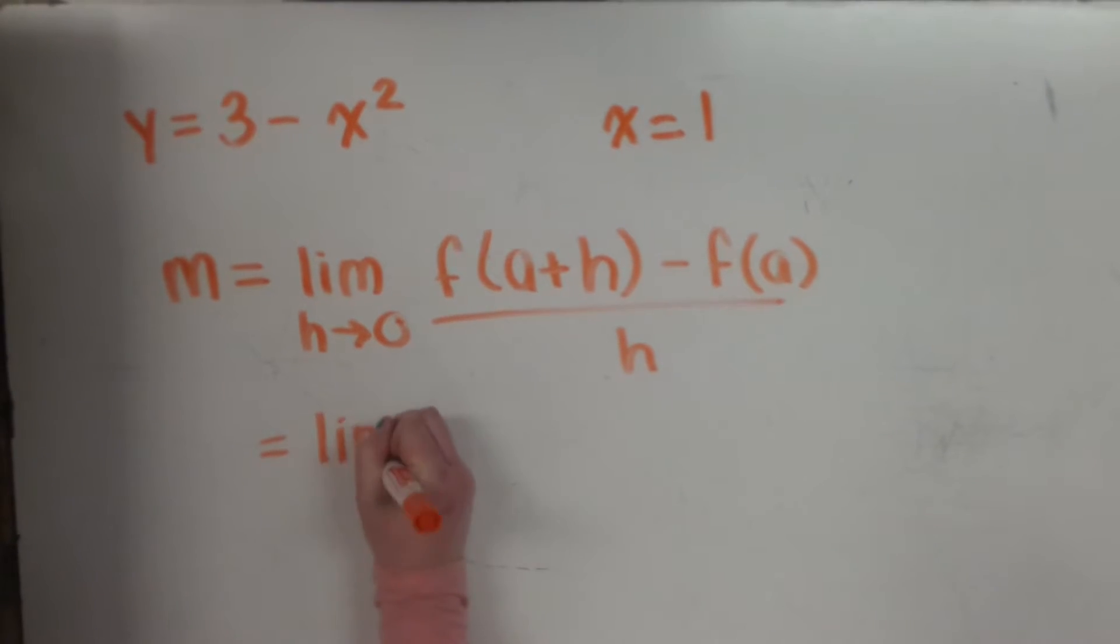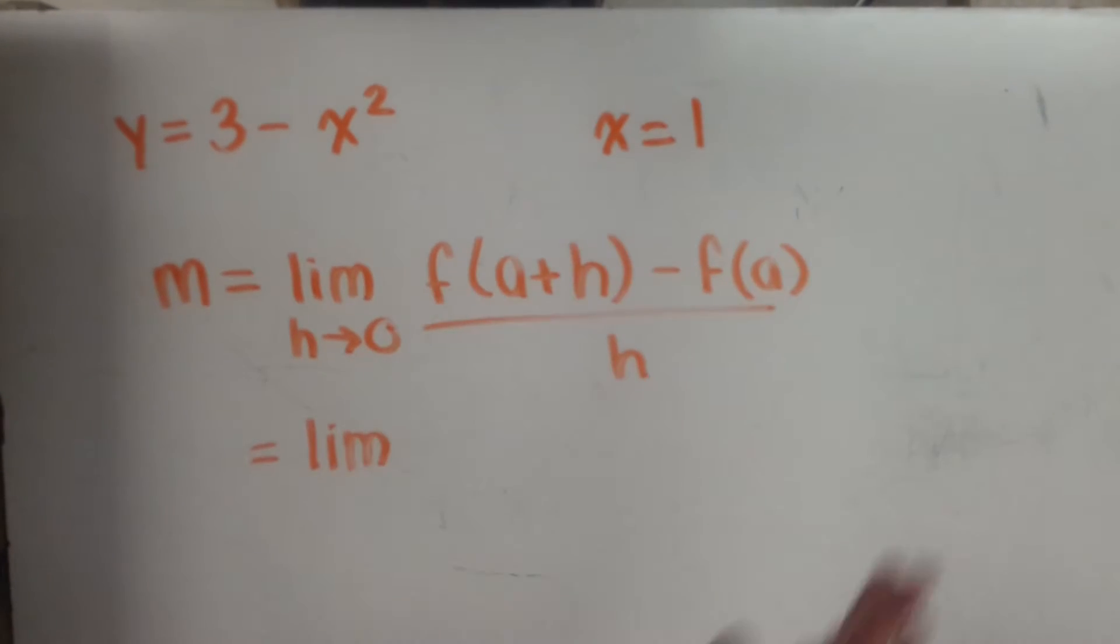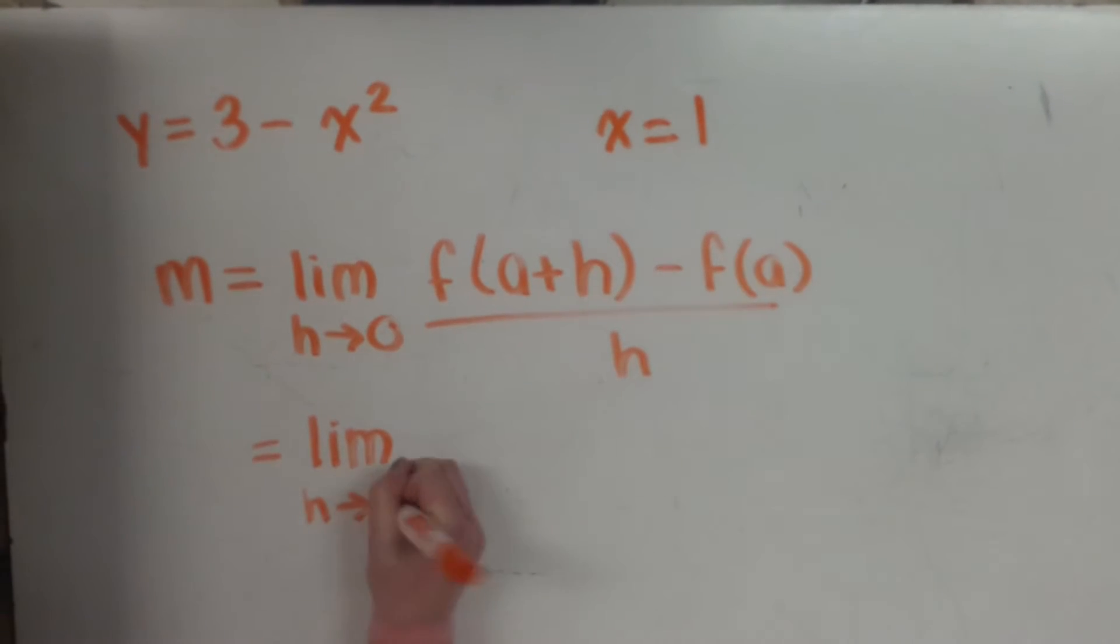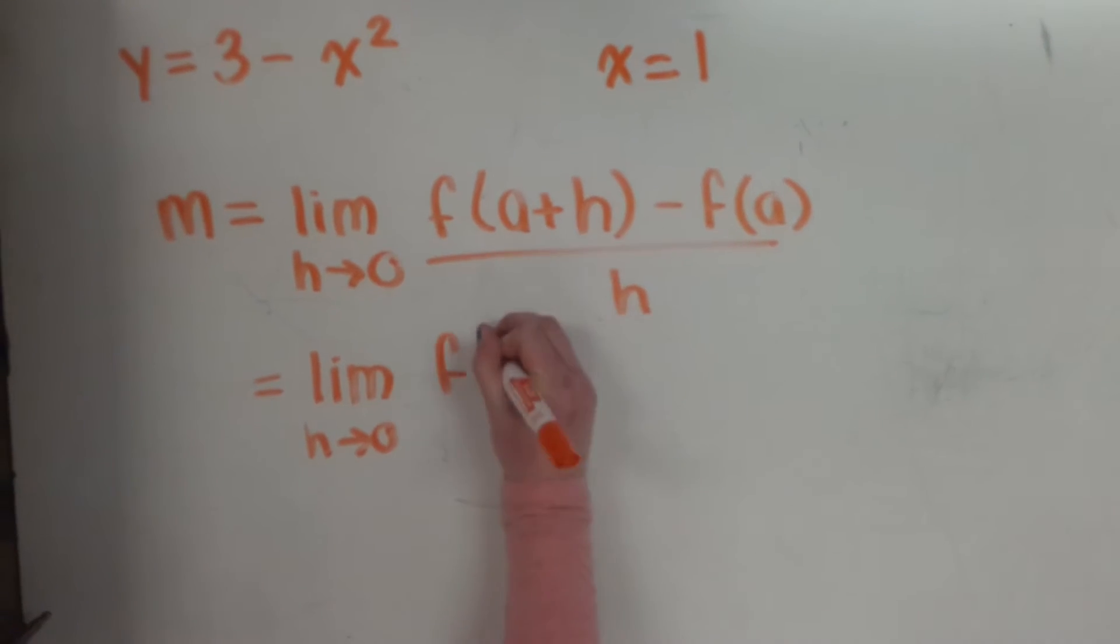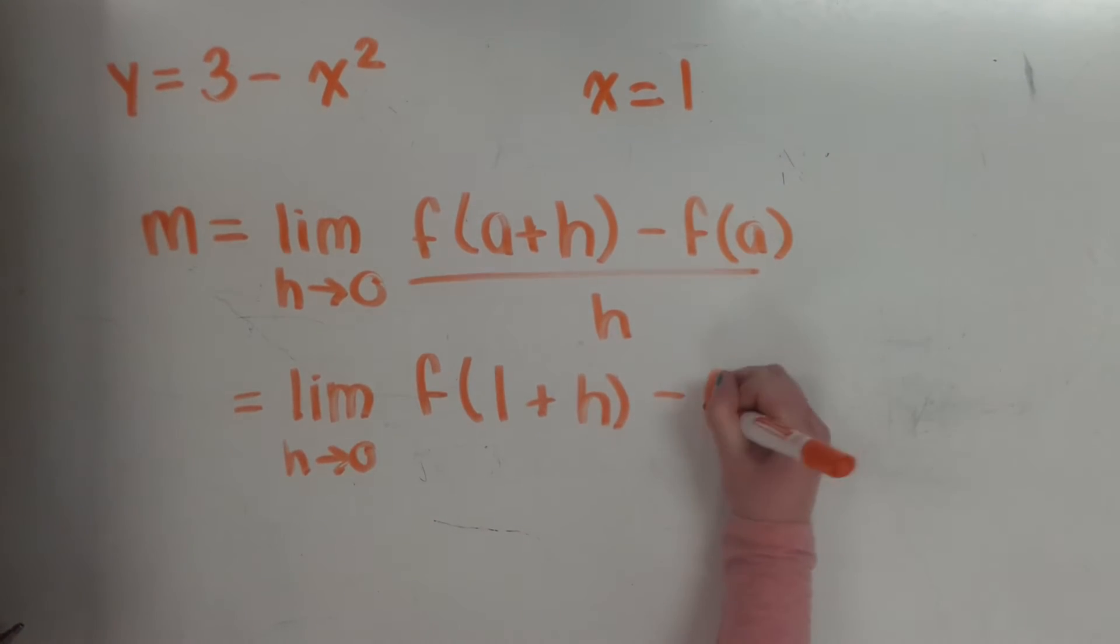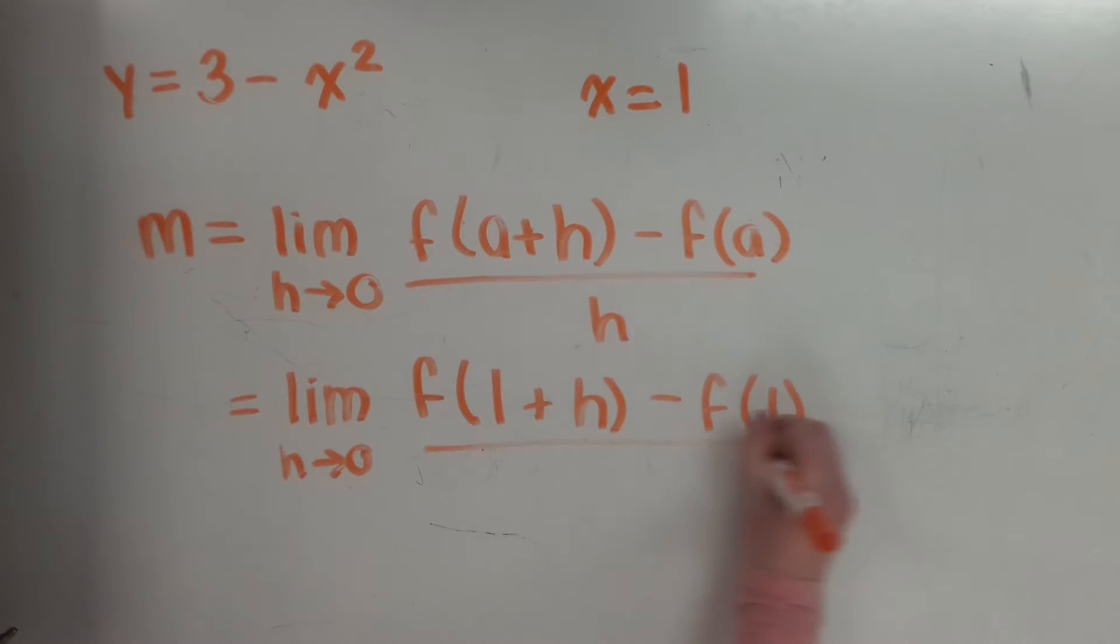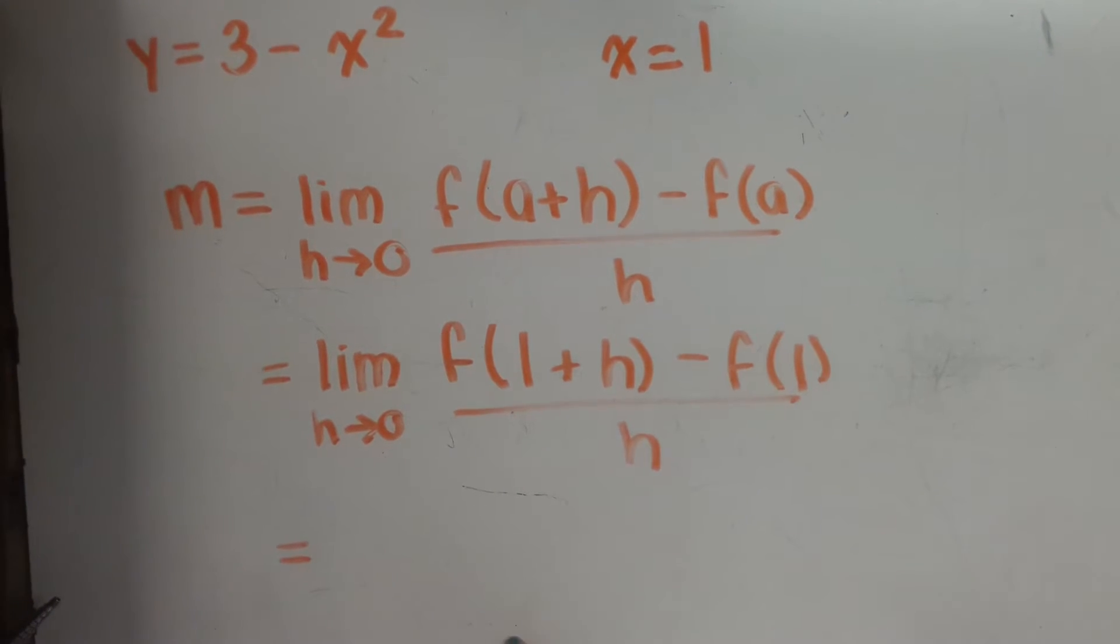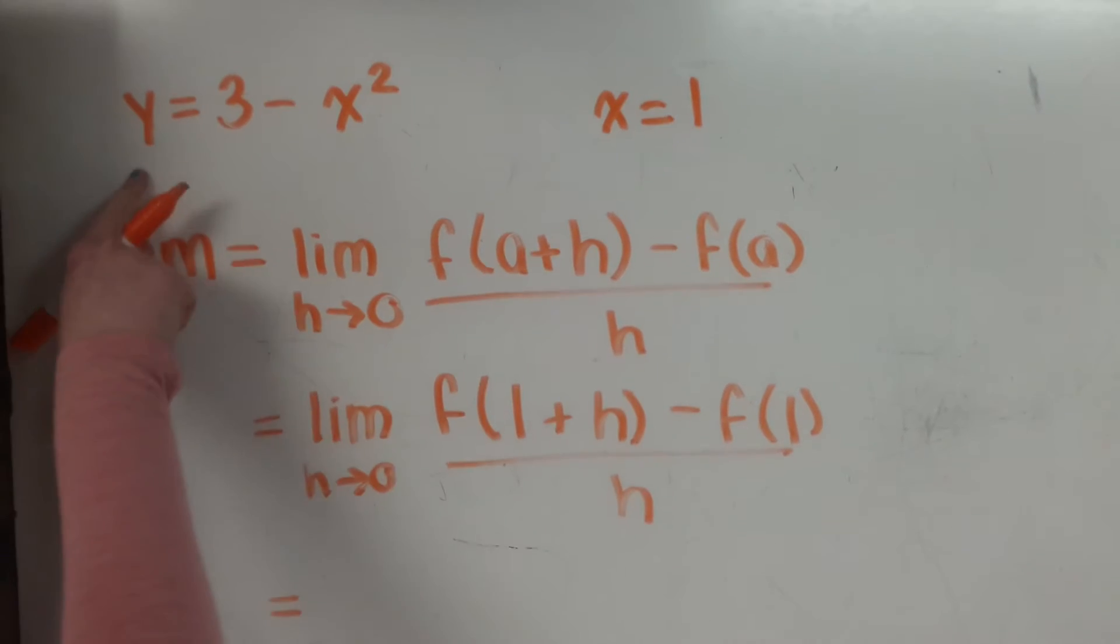So then we want to substitute in 1 for everywhere there's an a or an x. So we do f of 1 plus h minus f of 1 divided by h. And then we turn this into our function.